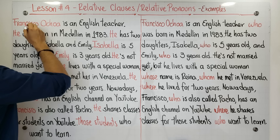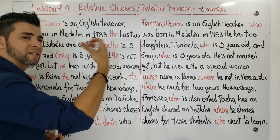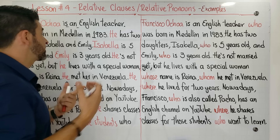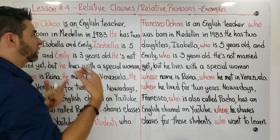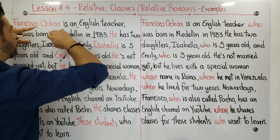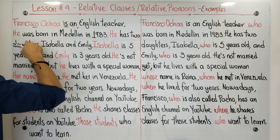Let's read and analyze together. 'Francisco Ochoa is an English teacher.' What is this? This is a clause — a clause and a sentence are the same. The characteristic of a clause: it has a subject (Francisco Ochoa), a verb (is), and a complement. This is an independent clause, not related to any other clause.